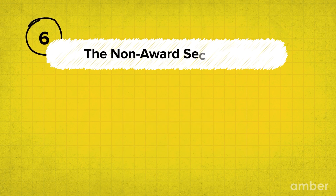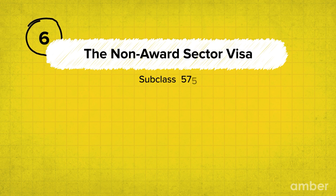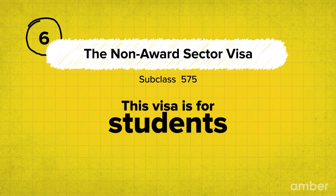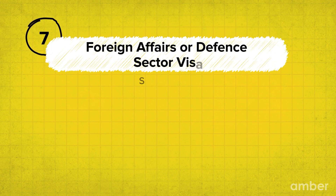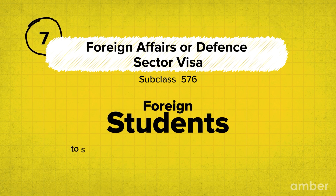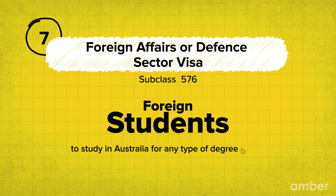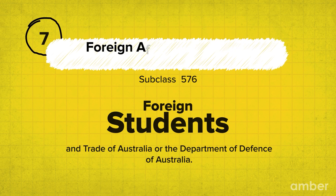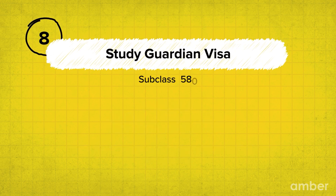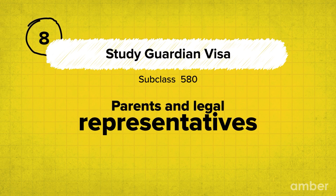The next category is the Non-Award Sector visa, subclass 575. This visa is given to students who wish to pursue a non-award foundation or other full-time courses. The Foreign Affairs or Defence Sector visa, subclass 576, is applicable to foreign students who are supported to study in Australia by the Department of Foreign Affairs and Trade or the Department of Defence of Australia. And the last category is the Study Guardian visa, subclass 580, for parents and legal representatives of international students under the age of 18.